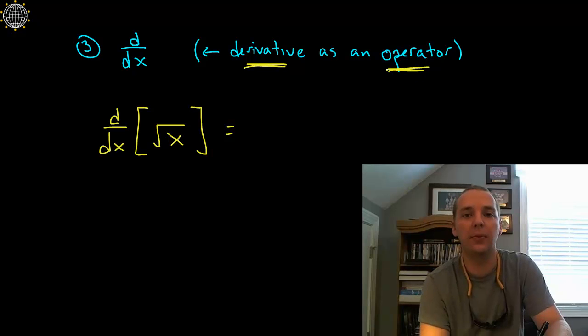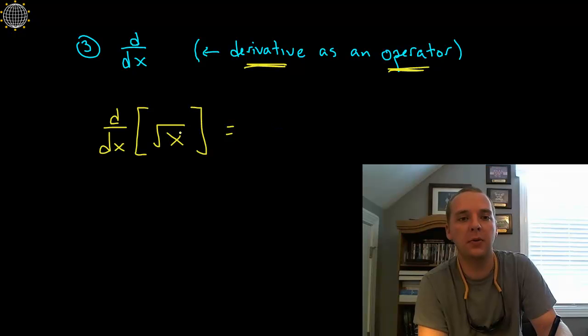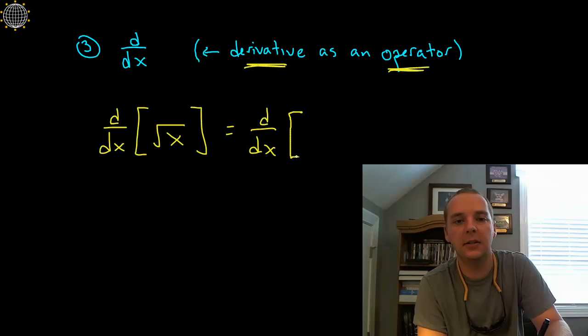But I'm going to, it's an operator, it's something I'm going to do to an expression. So what I would probably do is I would probably rewrite the square root function first as x to the one-half.